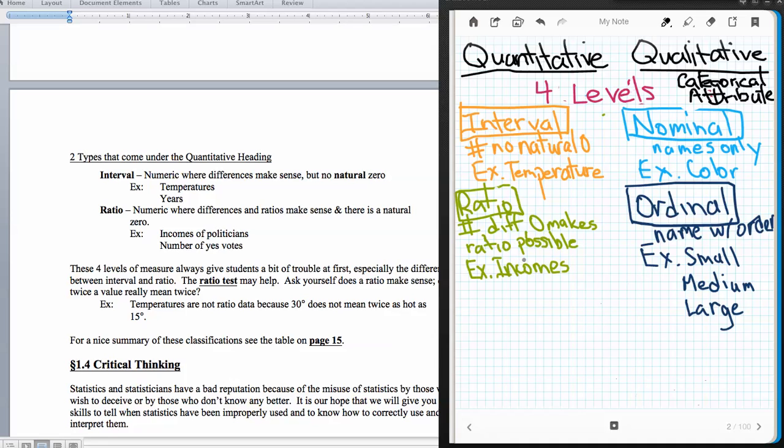When we say the incomes of politicians, that is indeed a ratio level of measure because one politician could make twice what another makes. That was a continuous example. An example of a discrete ratio measure would be the number of yes votes. If we had 25 people voted yes and 12 voted no, that can create a ratio. Therefore, we can say those are indeed a ratio level of measure.